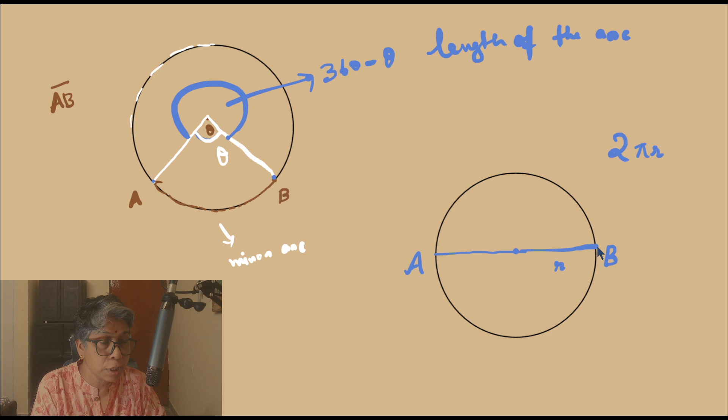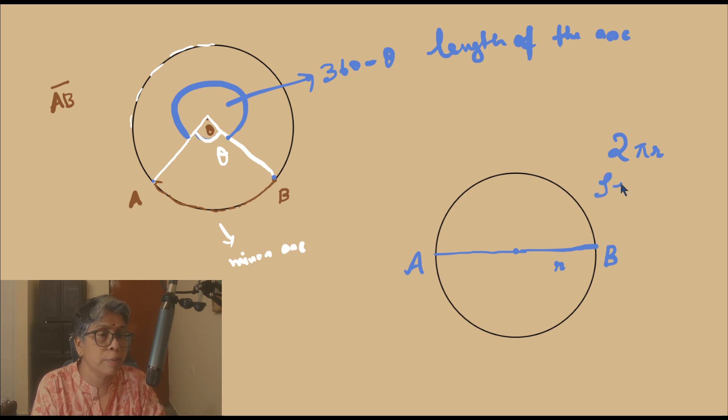What would be the length of this arc? Half the circle, which is popularly called a semicircle.